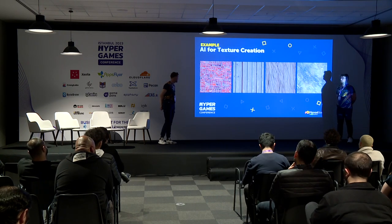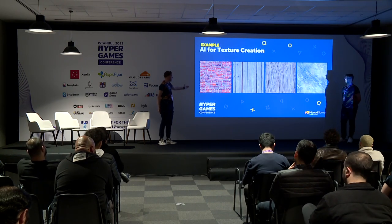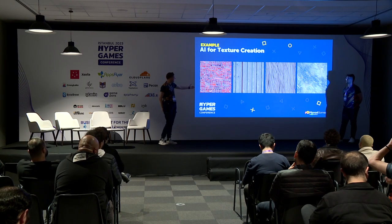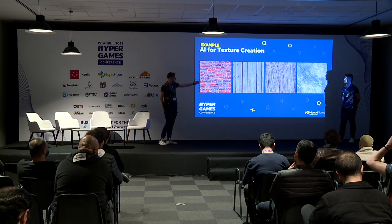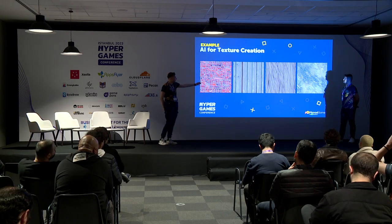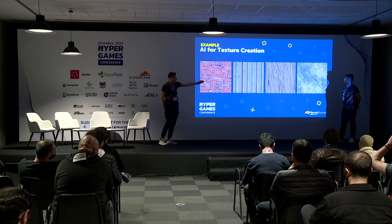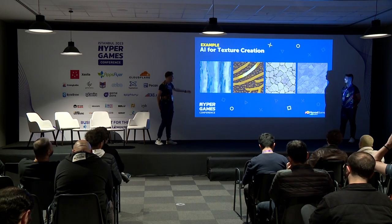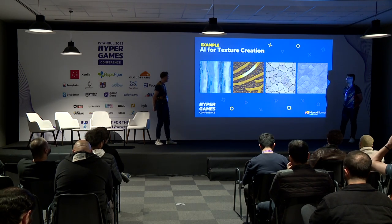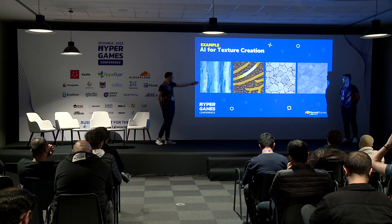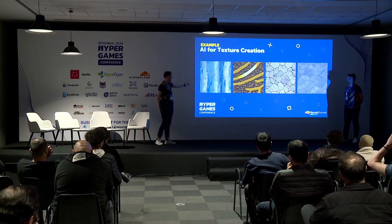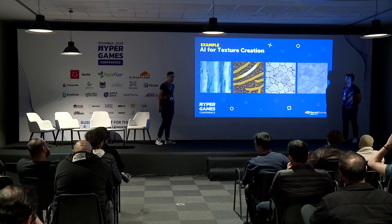Here are some examples of AI-generated textures: bricks, a wooden log, wooden planks, and marble — all in different styles. And here are more examples: realistic dirt, tiles, and wool patterns.